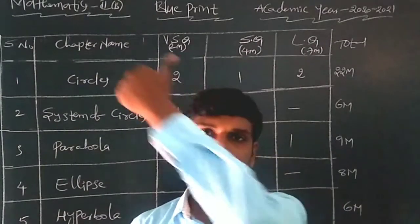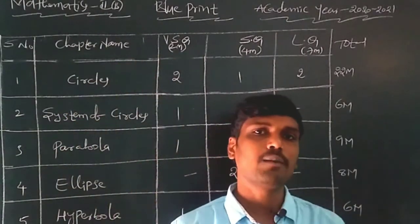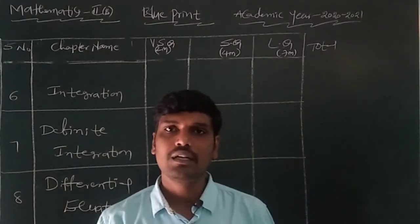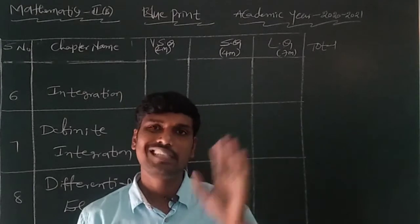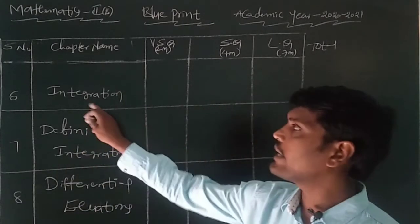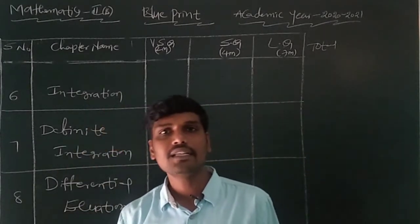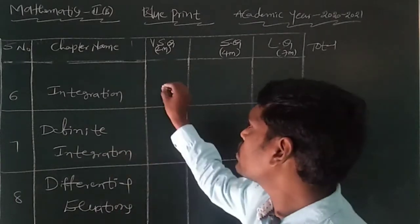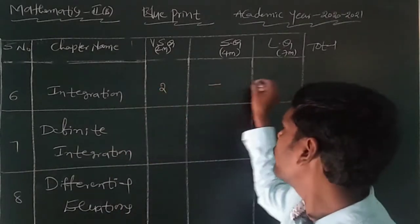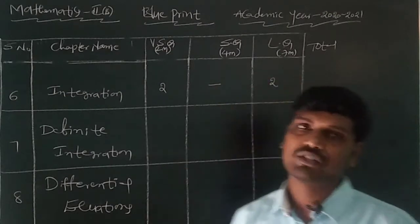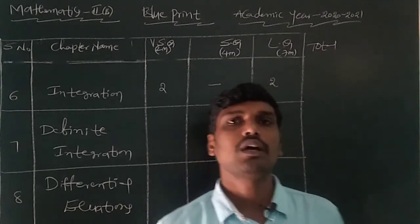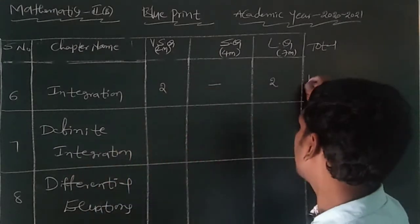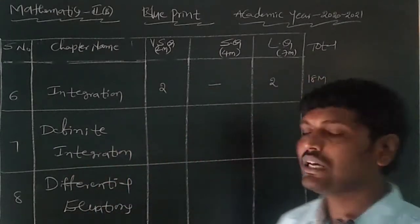Chapter six belongs to Calculus — that is Integration. In this Integration chapter: two 2-mark questions and two 7-mark questions are coming — no 4-mark questions. Total: 4+14 = 18 marks coming to the IP examination from the Integration chapter.